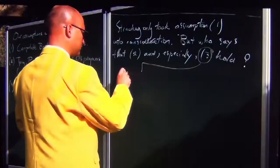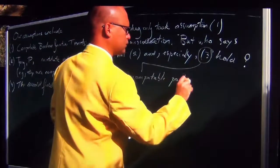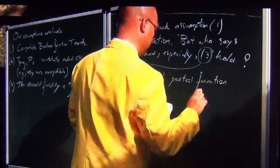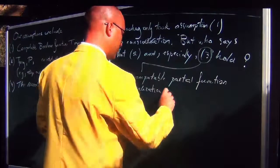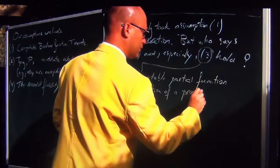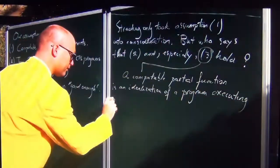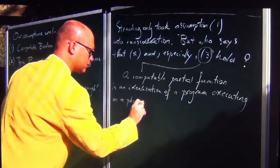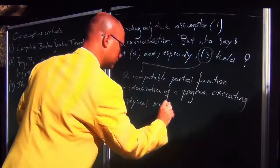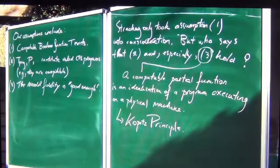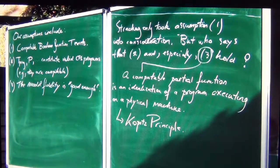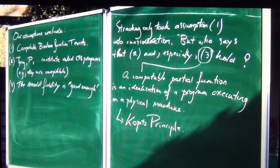Concerning the third assumption: a computable partial function is an idealization of a program executing on a physical machine. This is the Coppet principle, which I already introduced in the beginning of this lecture.